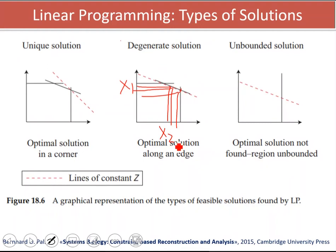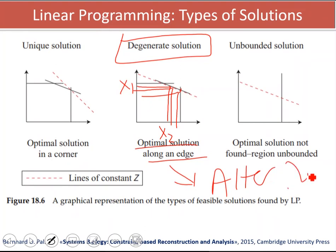Those cases are known as degenerate solutions, so optimal solutions lie on an edge. We have more than one solution that satisfies our optimization criteria, that satisfies our objective function. This is related to this problem of alternate optima, so we have more than one optimum solution with the same optimum value.